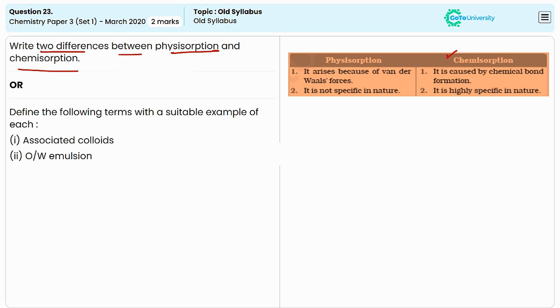These are the differences between physisorption and chemisorption. We need to write any two to achieve two marks. Next, we have to define the given terms with suitable examples. The first one is associated colloid.